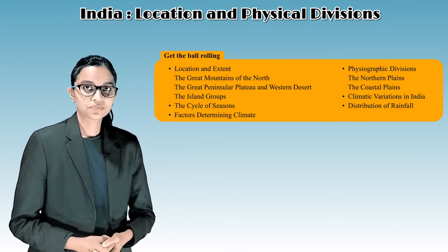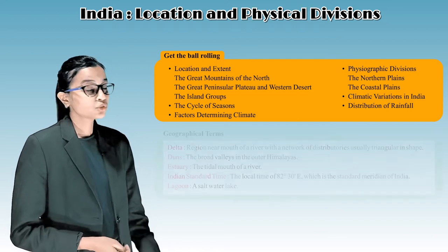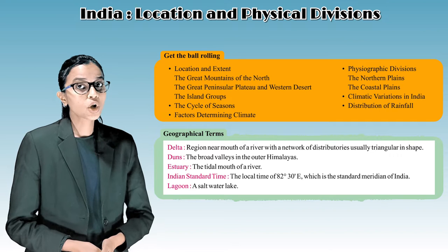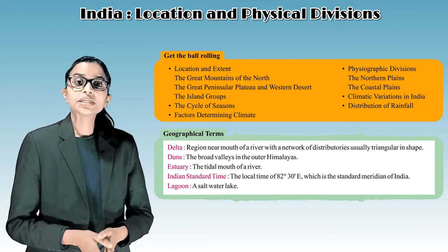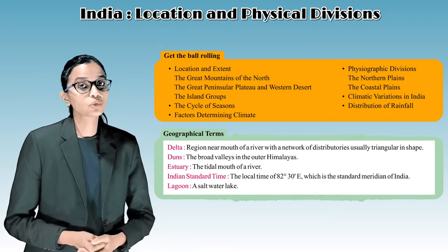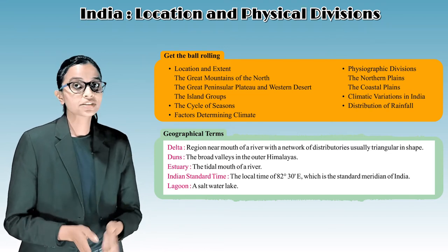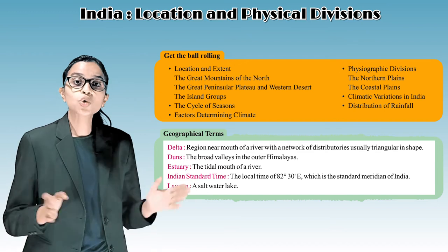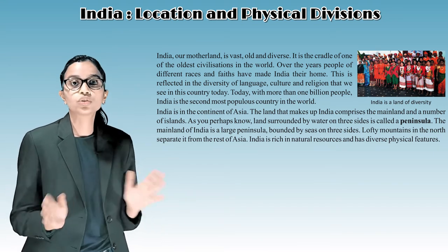Geographical terms: Delta - a region near the mouth of a river with a network of distributaries, usually triangular in shape. Duns - broad valleys in the outer Himalayas. Estuary - the tidal mouth of a river. Indian Standard Time - the local time of 82°30' East, which is the standard meridian of India. Lagoon - a saltwater lake.